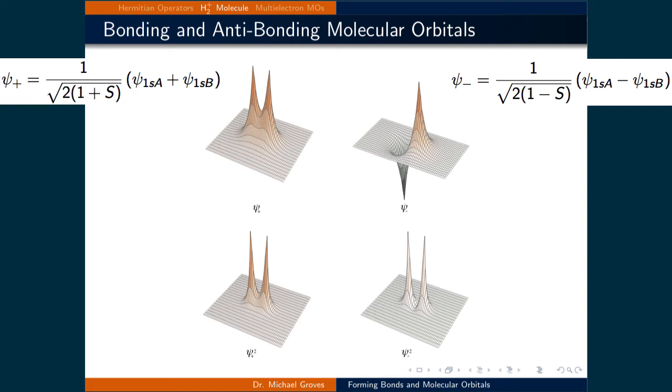Plotting these two wave function solutions gives the top two images, while plotting psi star psi, meaning the probability density, gives the bottom two images.